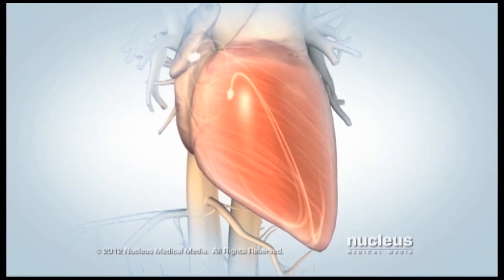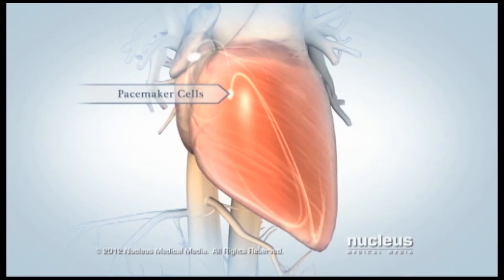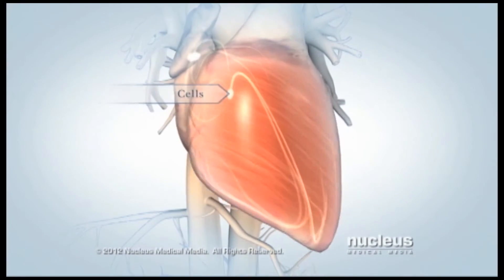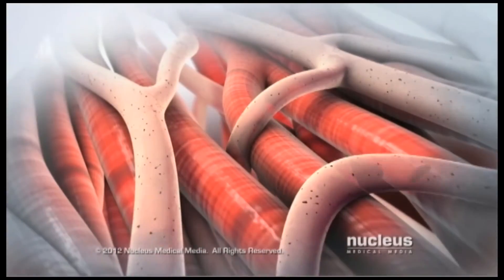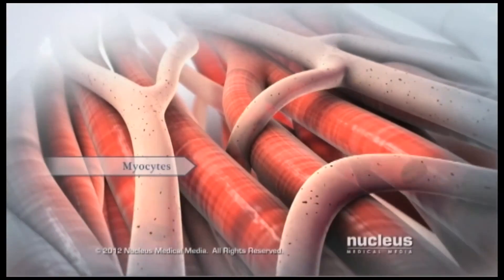When special cells, called pacemaker cells, generate electrical signals inside your heart, the heart muscle cells, called myocytes, contract as a group.